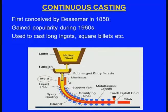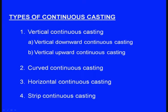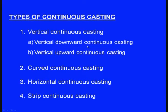Before going further, let us see the classification and types of the continuous casting process. Broadly they can be classified into 4 types: one is vertical continuous casting, second is curved continuous casting, third is horizontal continuous casting, and the fourth is strip continuous casting. The first one, vertical continuous casting, is sub-classified as vertical downwards continuous casting and vertical upward continuous casting.